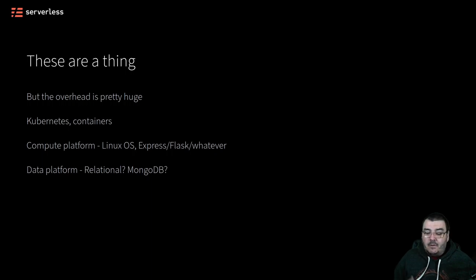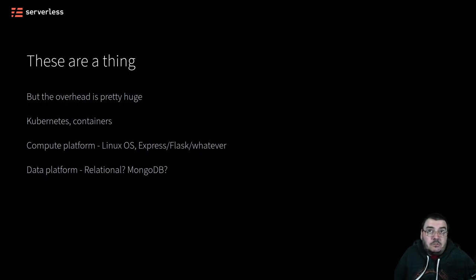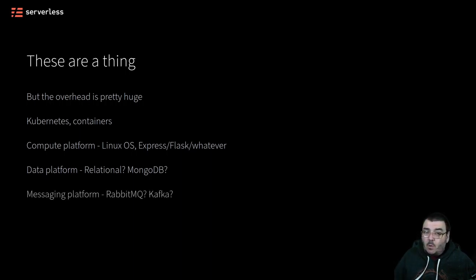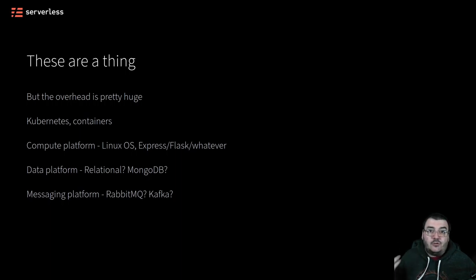You're going to need a data platform to store all this data in. Remember, the services themselves are going to have a single data store each, so maybe MongoDB might be better suited, or you may need relational data stores — you still need to manage those, maintain those, scale those. What if you need a messaging platform to send messages between your services? Are you going to use RabbitMQ? Are you going to use Kafka? How are you going to maintain and scale those? Managing event-driven microservices becomes a very difficult thing to do.